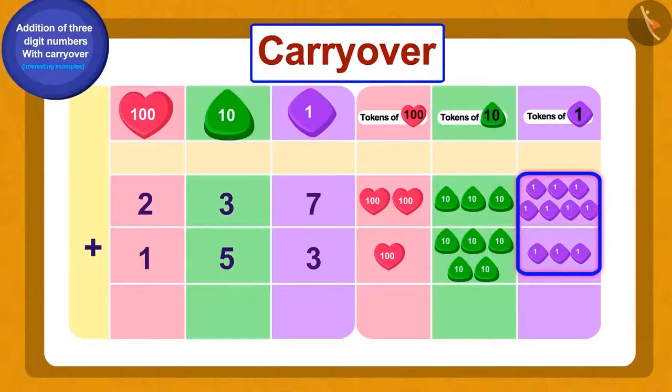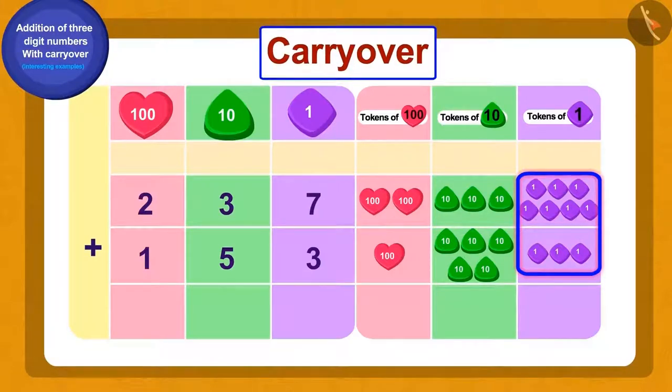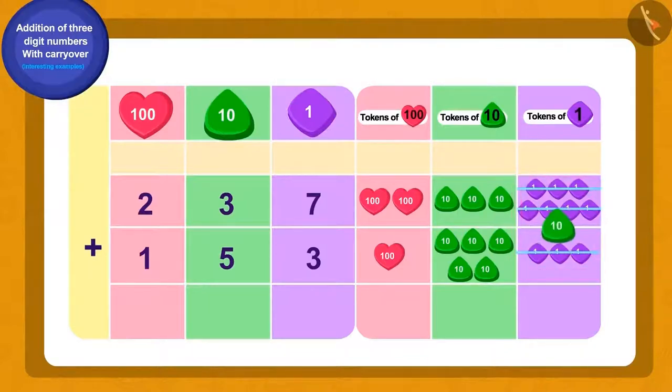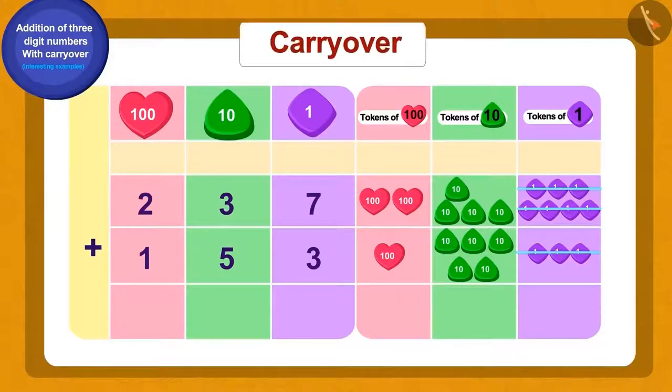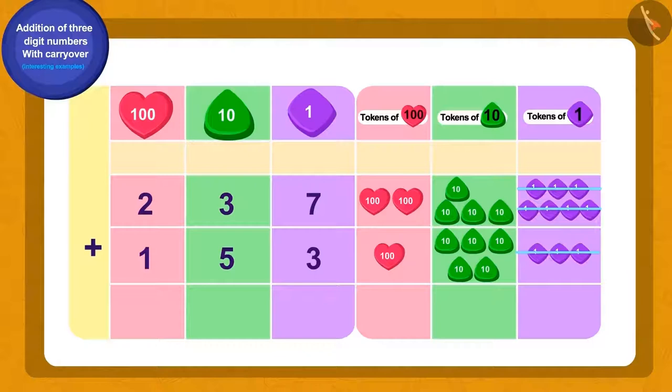What can we do now? Yes, we will use carryover. Add 10 ones tokens to make one token of tens. We will write this 10 token along with the rest of the tens tokens. Using the carryover process, we will show it by writing a one in the tens digit place. Now we do not have any ones tokens left, so we will write a zero for this.